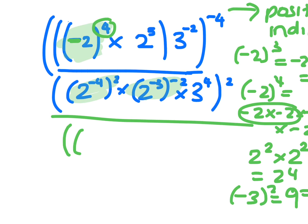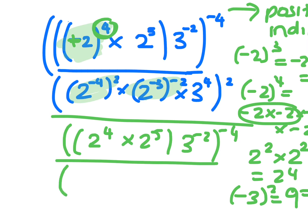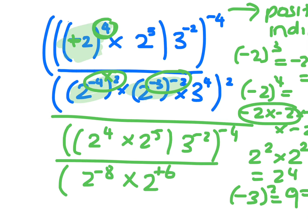So that minus 2 will cancel out because that is an even index, so that's 2 to the 4. That bracket's gone, times 2 to the 5, brackets 3 to the minus 2, 4 to the minus 4, all over brackets. That's going to be 2 to the minus 4 times 2 — because you multiply those indices — is 2 to the minus 8. This one, minus 3 times minus 2 is plus 6, times 3 to the 4. And then that's all to the power of 2.